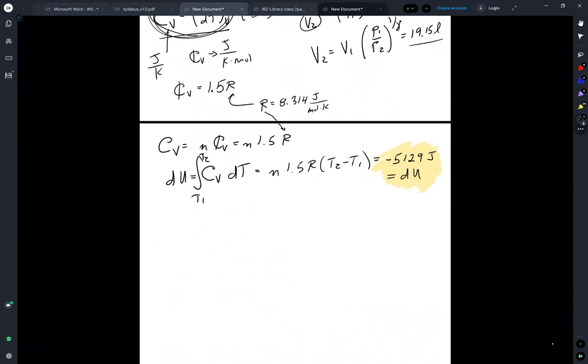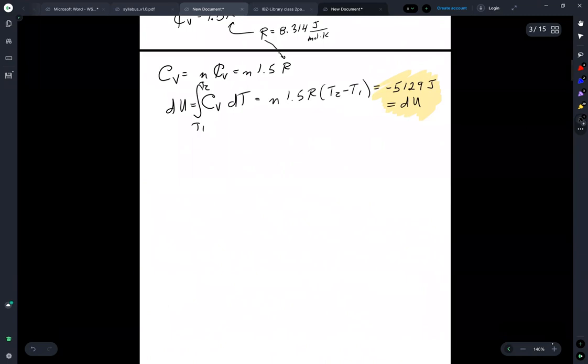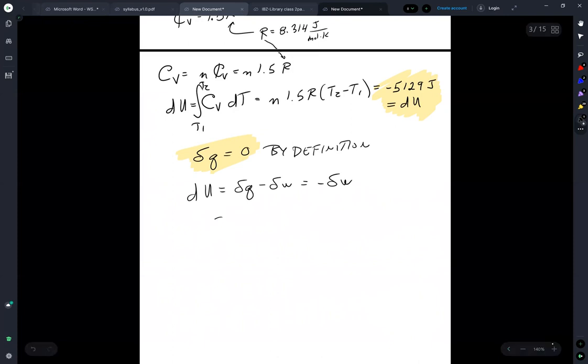Well, we know that dQ equals 0 by definition. We know that dU is equal to dQ minus dW, so that means that the work is 5129 joule. Okay.